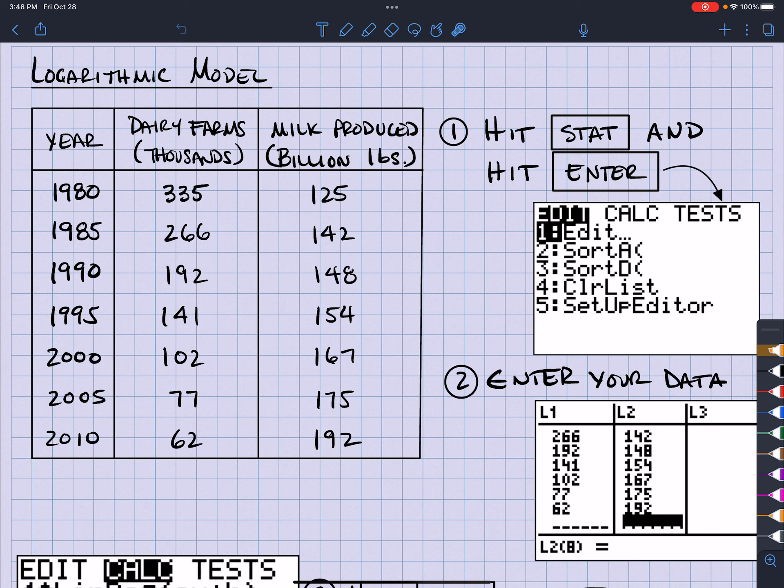In this particular word problem, it told me to put the dairy farms as the independent variable. So, let me put down here that independent variable means the X value. And the Y would be the dependent variable.